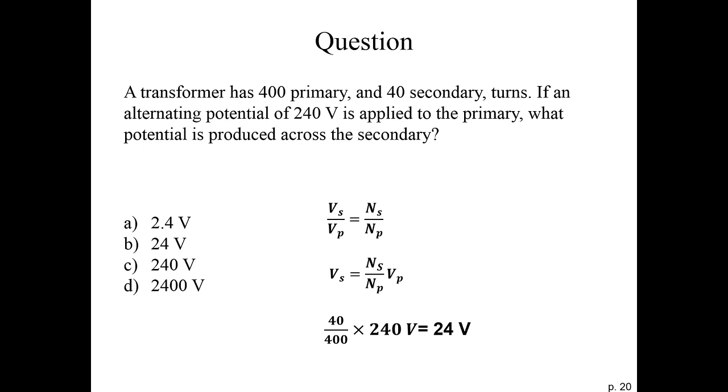So we plug that in. We get 40 turns over 400 turns times 240 volts, which gives us 24 volts for our secondary coil. So the secondary coil has one-tenth the turns that the primary coil has, so it has one-tenth the voltage.